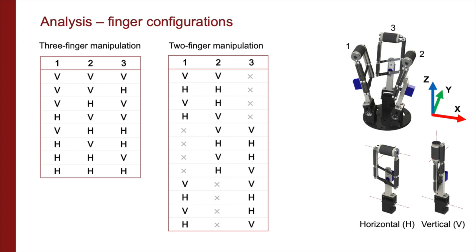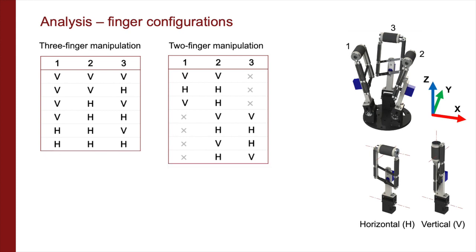For simplicity, we constrain each roller to vertical or horizontal position, denoted by V or H, or simply unused, denoted by cross. This results in eight possible three-finger sphere manipulation configurations and twelve possible two-finger ones. Considering the symmetrical combinations to be the same, this leaves six three-finger configurations and seven two-finger ones.